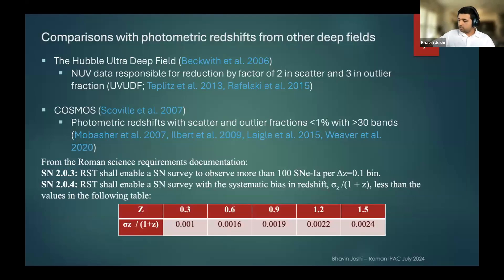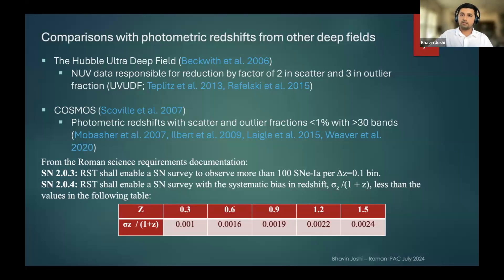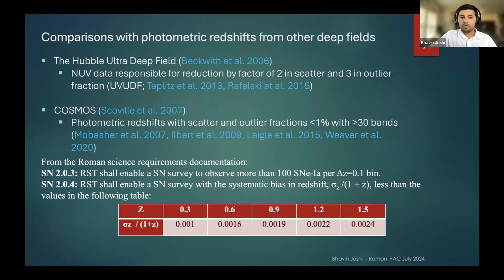For comparison with other deep fields: since HST and Roman have the same mirror size, the HUDF is an interesting comparison. It started as a four-band deep field with a single ACS pointing, and adding near-UV and near-IR data has been shown to reduce scatter and outlier fractions by factors of two and three, respectively. For the COSMOS field, which has more than 30 to 40 bands including many narrow bands, photometric redshift performance is exceptional — scatter and outlier fractions less than a percent, almost on par with spectroscopy.